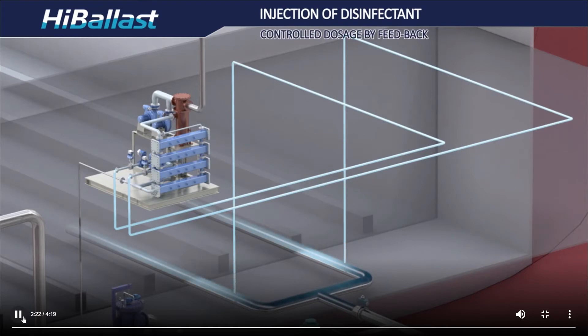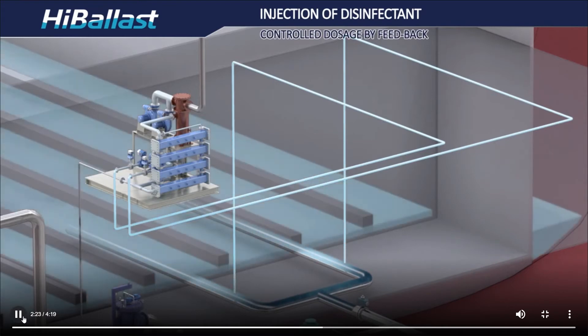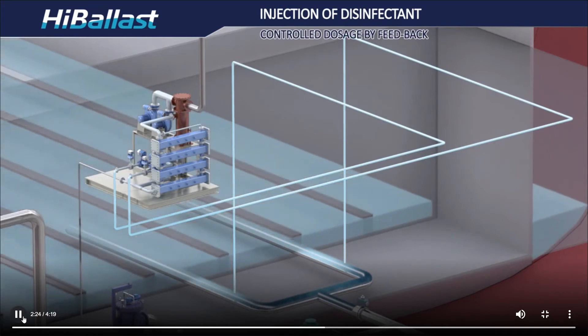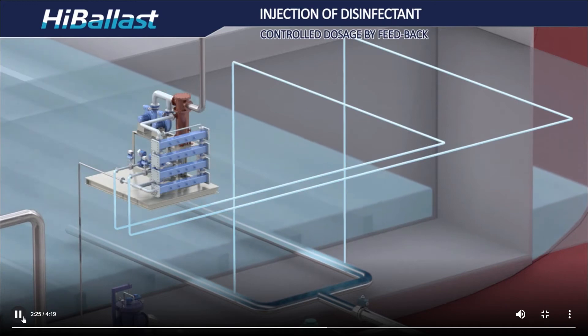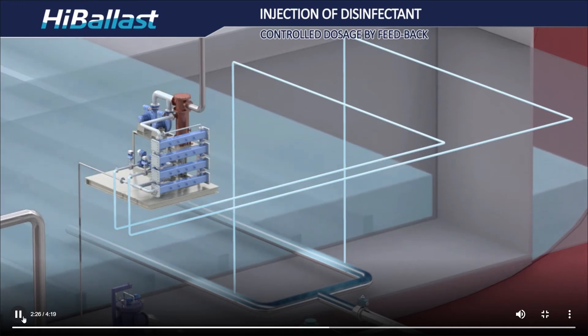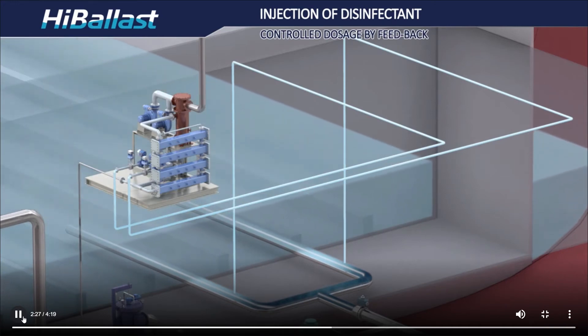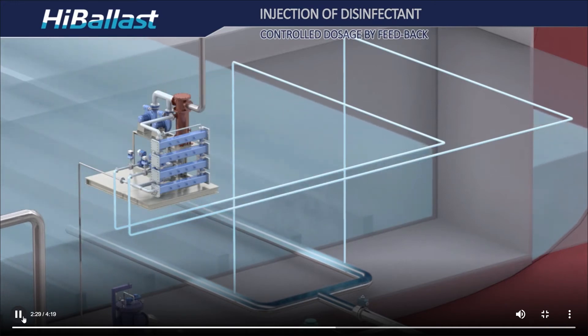The hypochlorite solution, a disinfectant, is injected into the main ballast line and then the sterilization process begins. The dosage of disinfectant is controlled by a feedback loop of continuous TRO measurement and a flow control valve to meet the target dose.